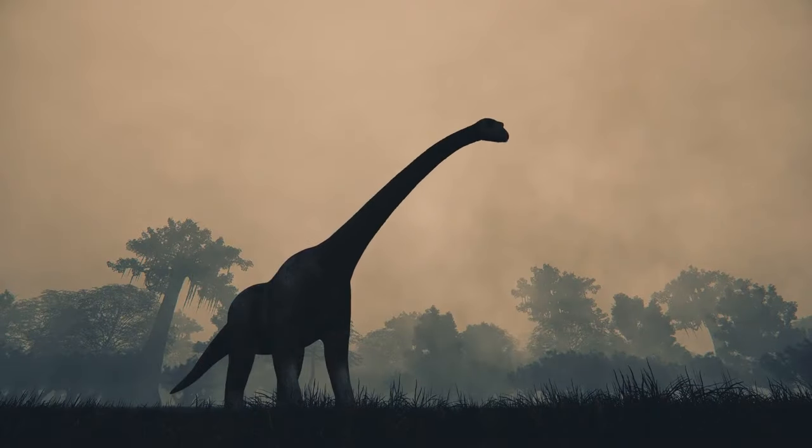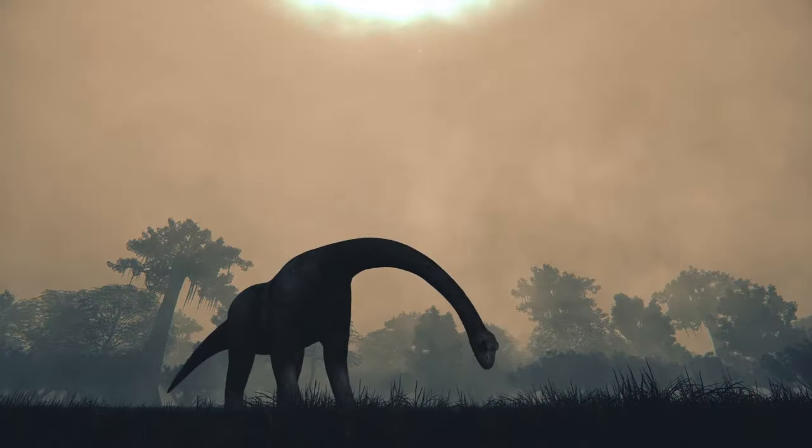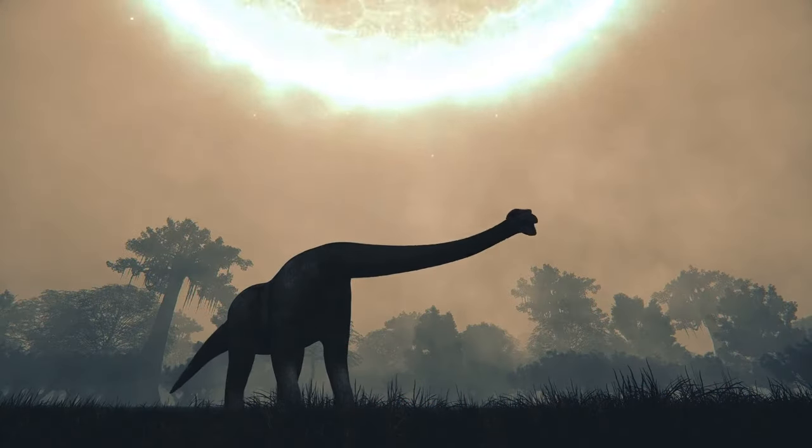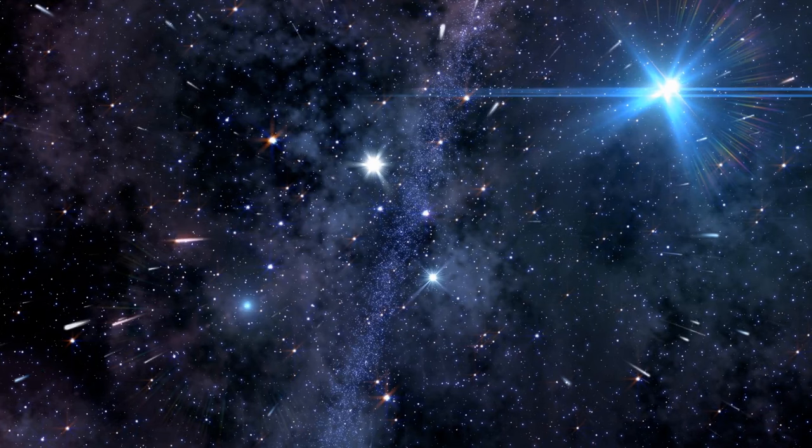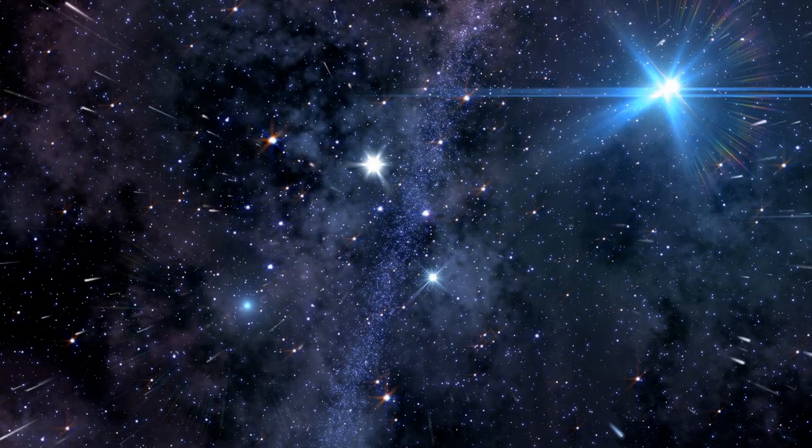The research also speculates that nearby supernova could have been responsible for at least one of the mass extinctions of complex life on Earth in the last 500 million years. But worry not, there are very few stars that might go supernova in the next, oh, million years or so.